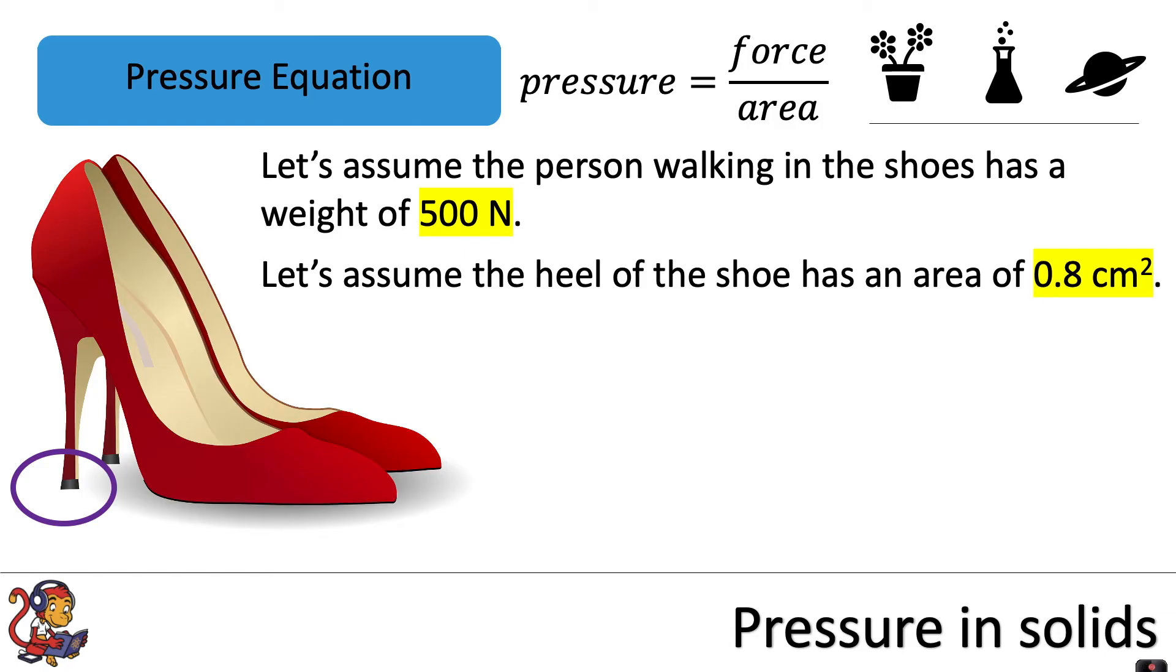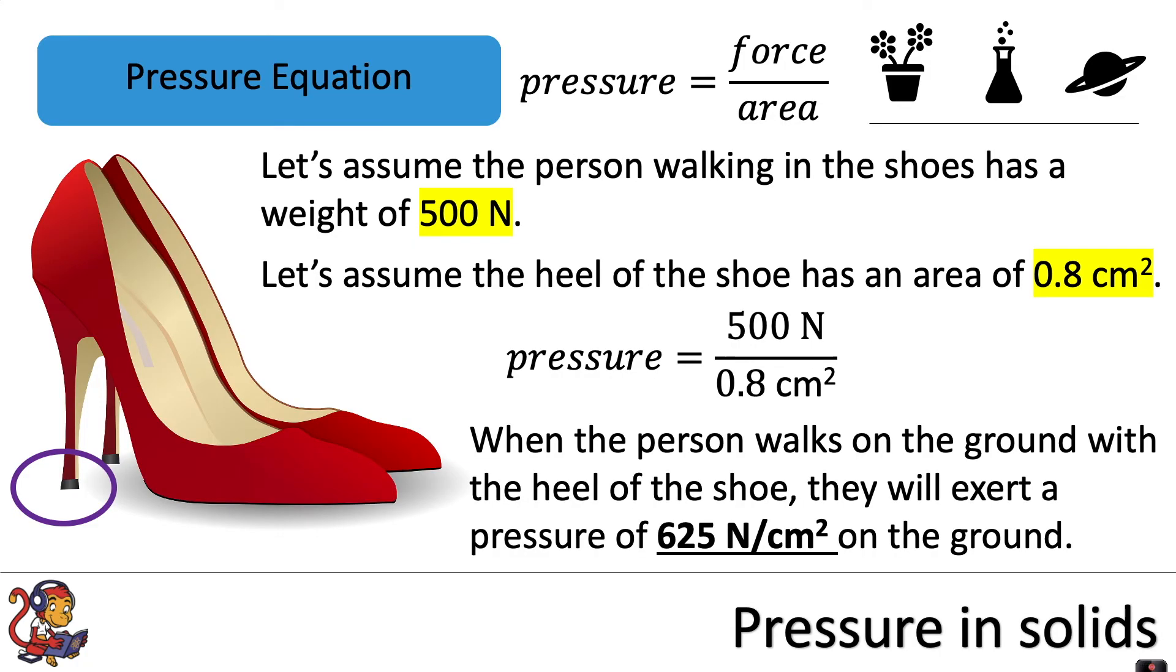So we put our numbers into our equation again: pressure equals 500 newtons divided by 0.8 centimeters squared. From this we can calculate that when the person walks on the ground with the heel of the shoe they will exert a pressure of 625 newtons per centimeter squared on the ground.